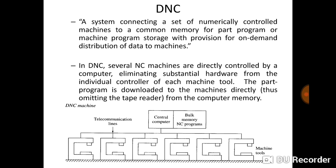Basically in a DNC machine there will be one centralized computer system, and that centralized computer system will consist of bulk memory for NC programs. That centralized computer system is connected to a number of NC machines with the help of a telecommunication line. In DNC, several NC machines are directly controlled by a computer, eliminating substantial hardware from the individual controller of each machine tool. The part program is downloaded to the machine directly, thus omitting the tape reader.